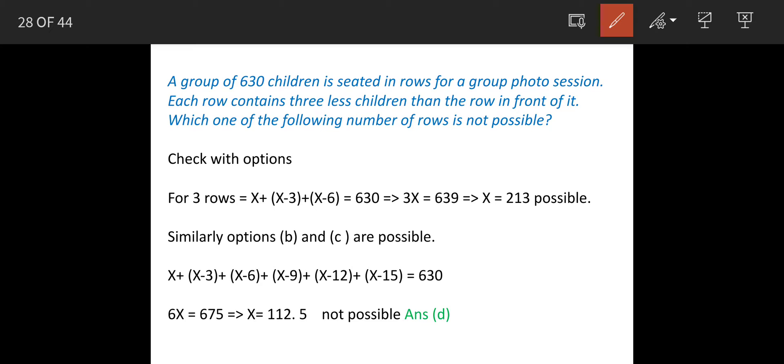So let us assume that for 3 rows, x are the number of children in first row, then second row will have x minus 3, 3 less, next one will have x minus 6. So this will be equal to 630. When you solve this, x we get as 213.